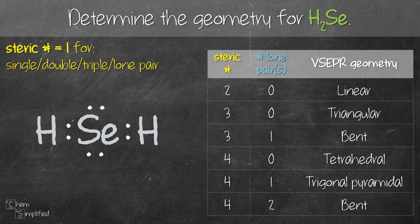Two lone pairs, that's two steric number, so 2 plus 2, we have a total of steric number 4.